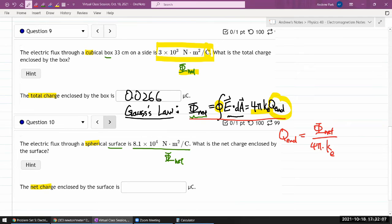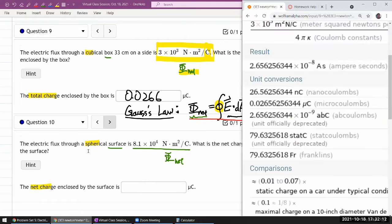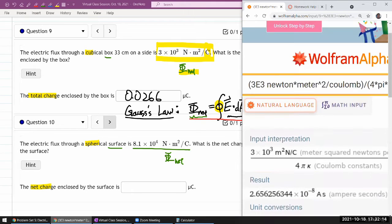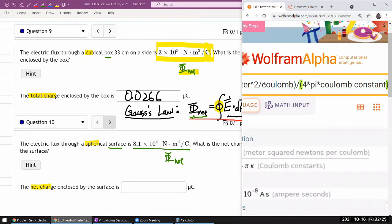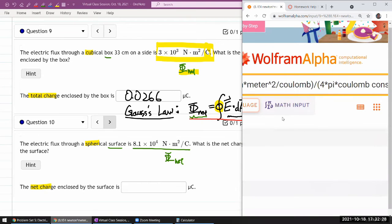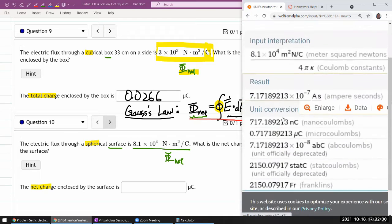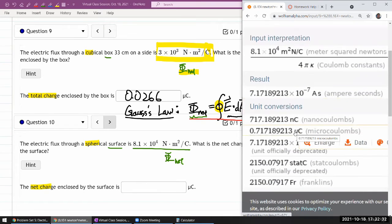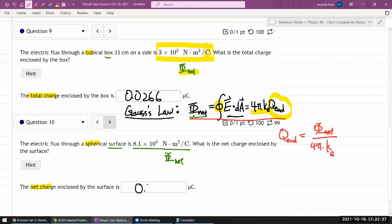Let me do the exact same calculation for question 10. So that would be different flux. 8.1 times 10 to the power of 4 times the units, divided by 4 pi Coulomb constant. And I get the answer, again, in microcoulombs, 0.717 microcoulomb.